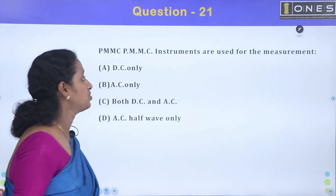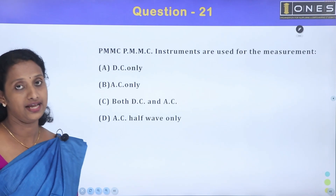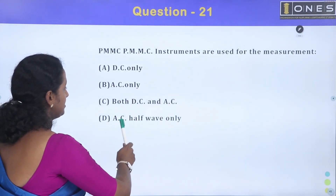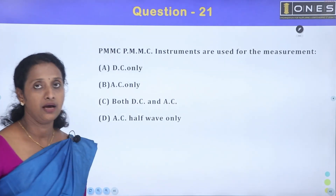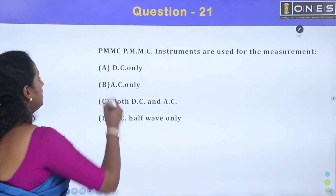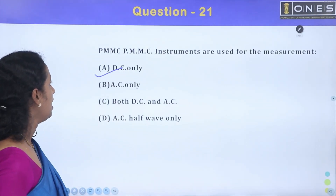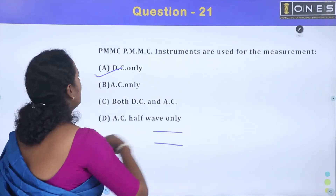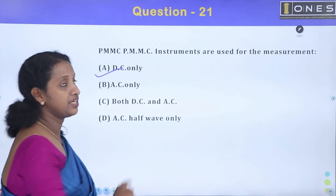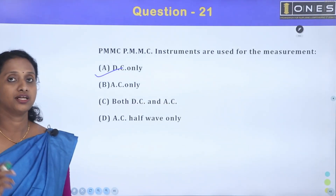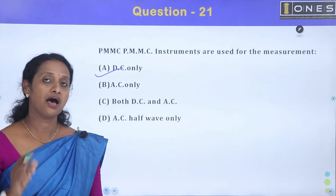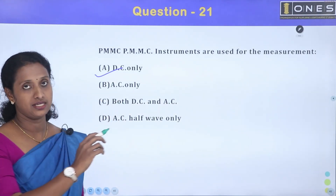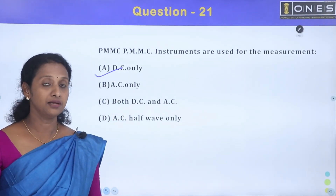Next: PMMC instruments are used for the measurement of — DC only, AC only, both DC and AC, or half AC wave only? DC only is the correct answer. PMMC stands for permanent magnet moving coil instruments. They cannot be used for AC because in AC the average value is zero, so there would be no deflection. PMMC instruments are used for DC current measurement only.